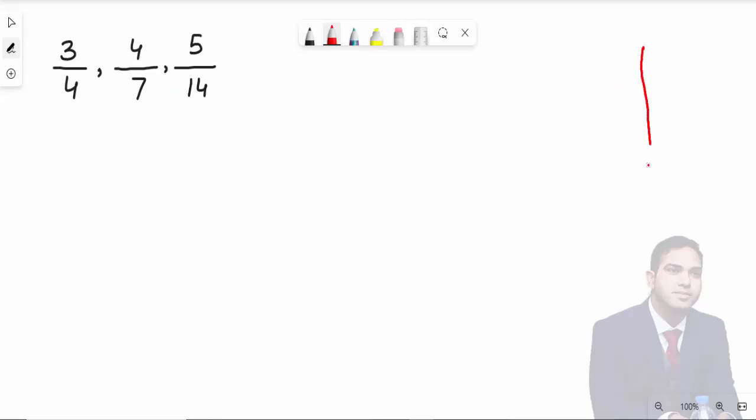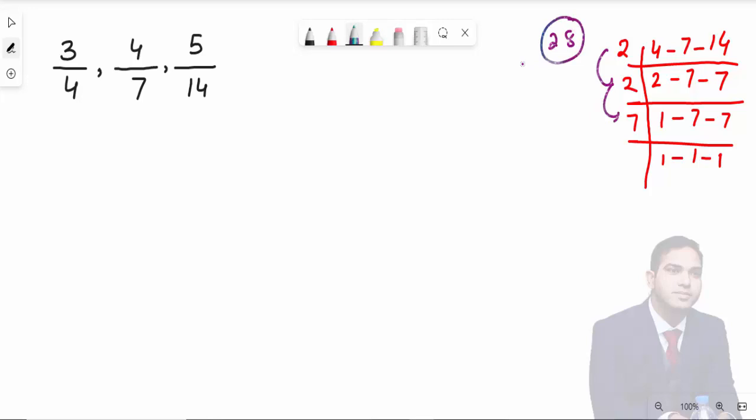So, 2 times 2 is 4, 2 times 7 is 14, then 7 times 1 is 7. The LCM is 2 times 2 times 7, which equals 28. So 28 is the LCM.